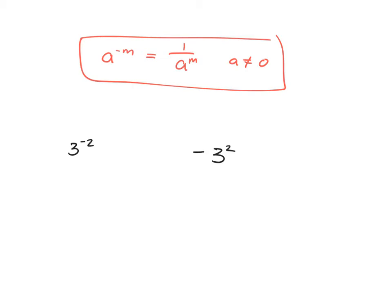Why do we have to exclude a as 0? Because we know dividing by 0 is undefined, so 1 over 0 is undefined. So we don't allow a to be 0, but any other number it works for.